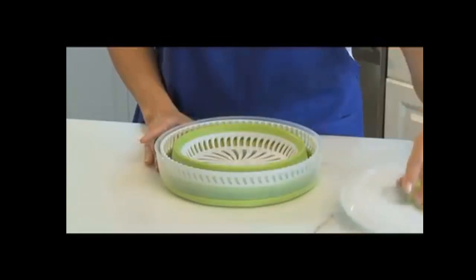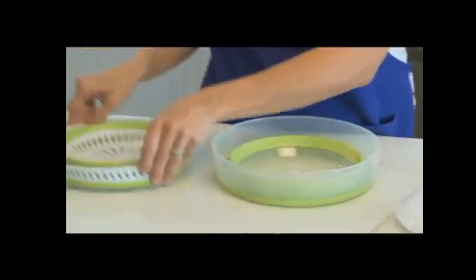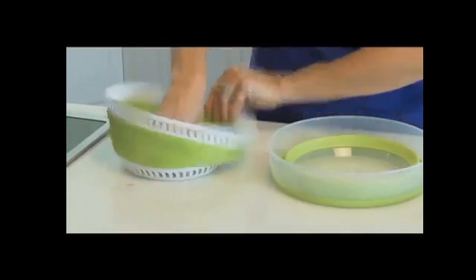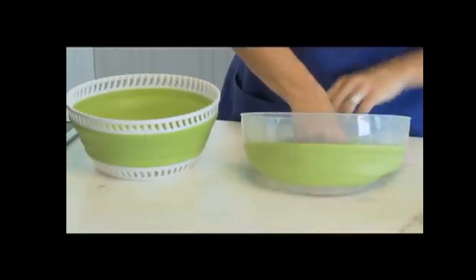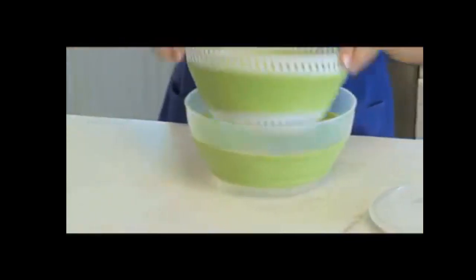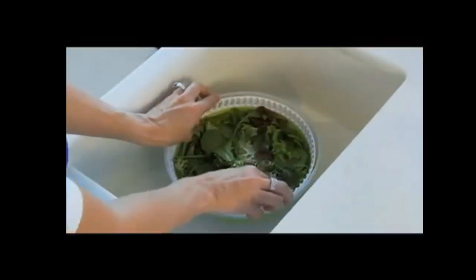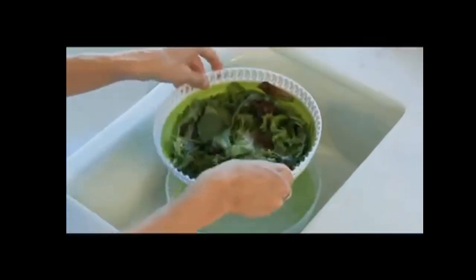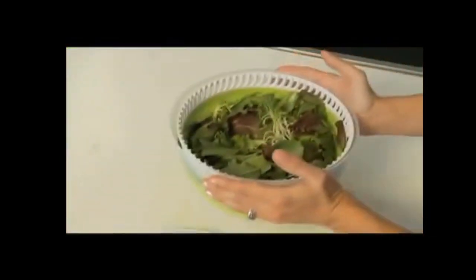Our tester found the knob and brake easy to operate when she washed and spun a head of green leaf lettuce, but did report it took longer to flush out the water because of the design on the brake. Around the circumference of the colander, it left less space for openings to allow water to escape while spinning.